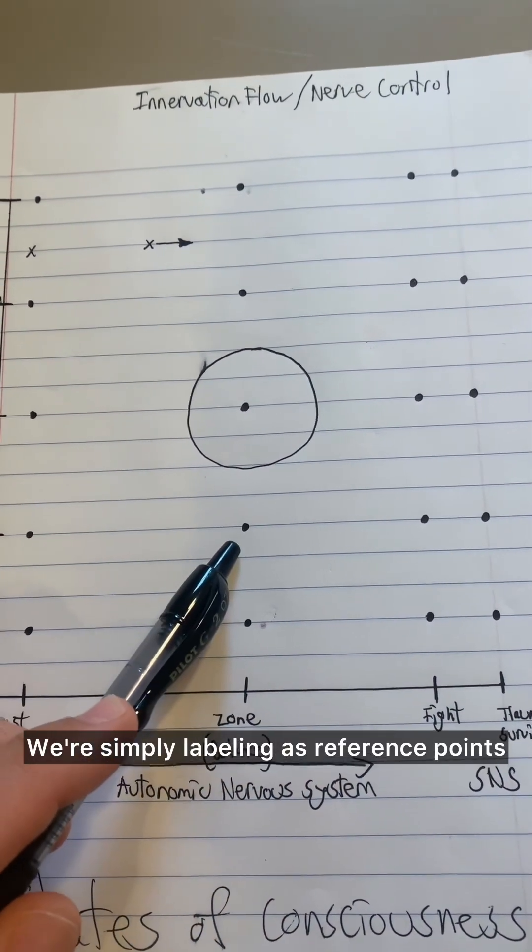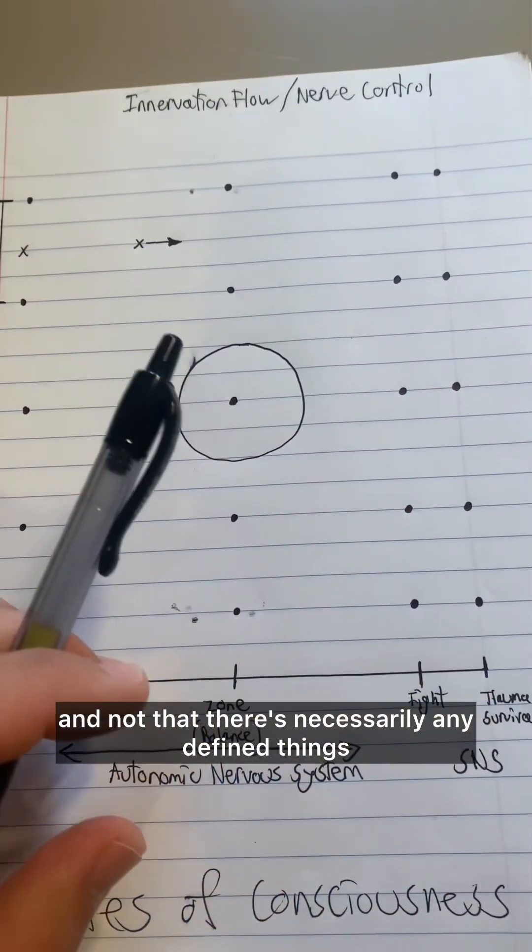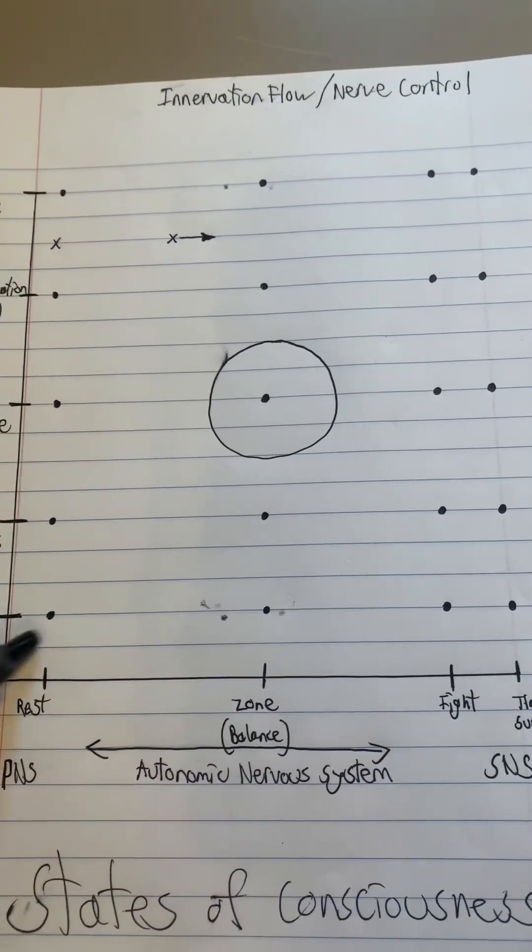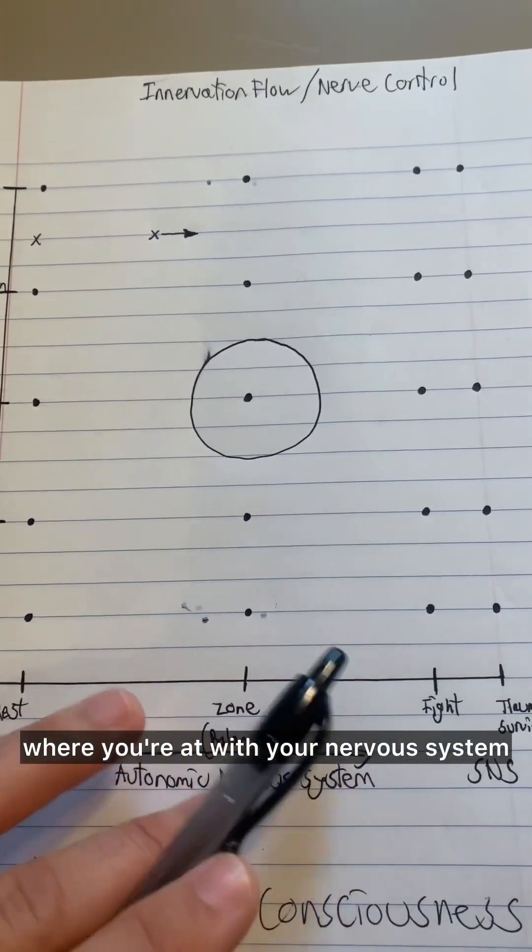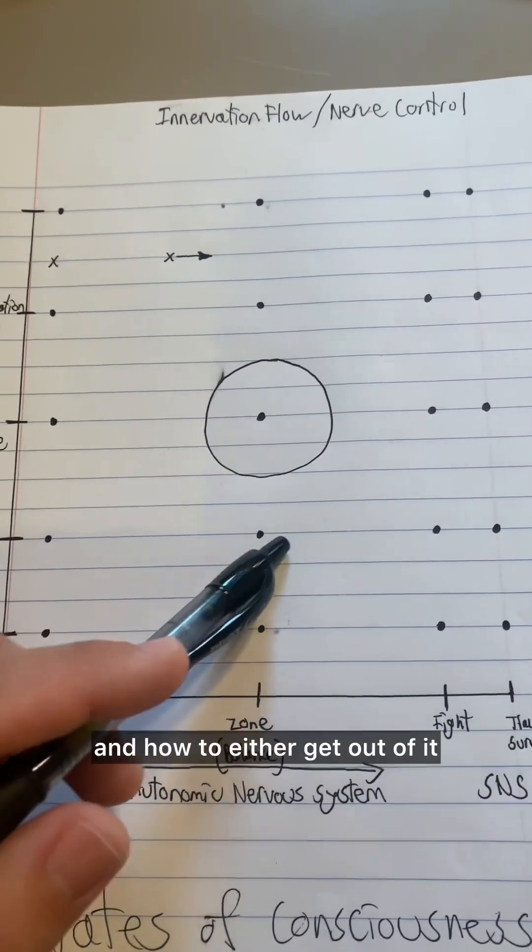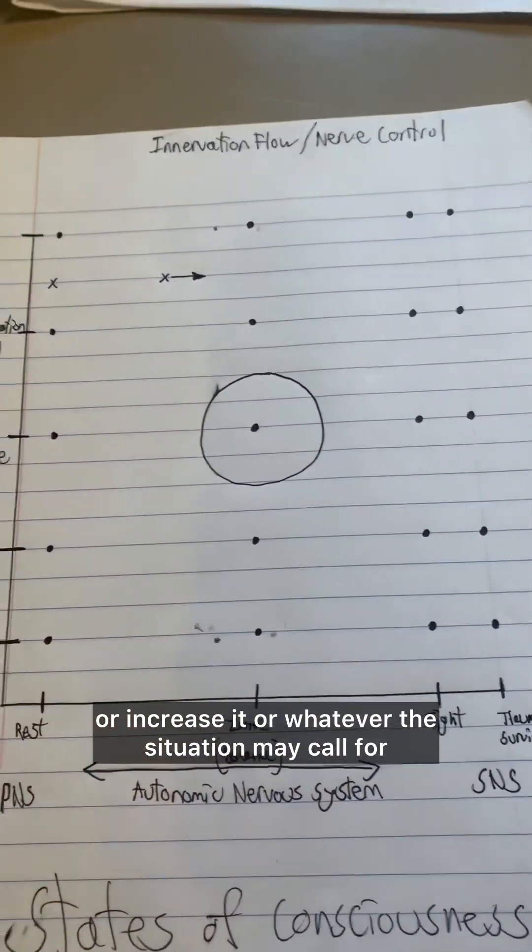We're simply labeling as reference points, not that there's necessarily any defined things, but it's as a map that helps you to understand where you're at with your nervous system and your visual signals in order to understand the state you're in and how to either get out of it, or increase it, or whatever the situation may call for.